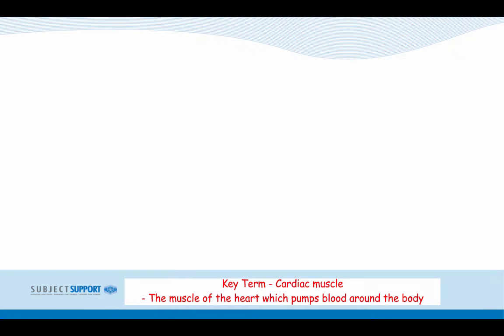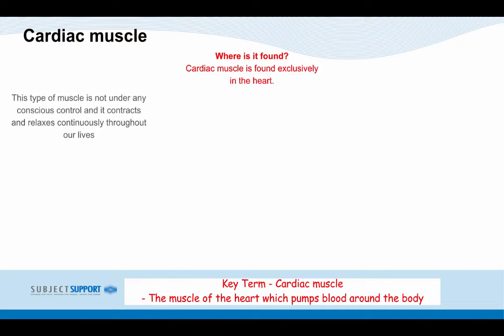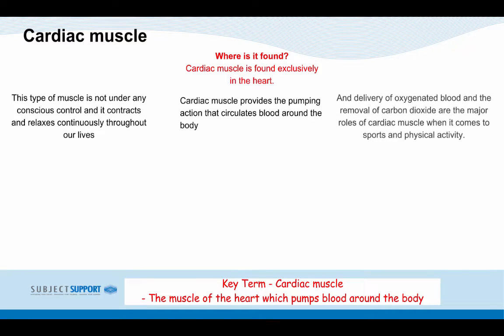Key term — cardiac muscle: the muscle of the heart which pumps blood around the body. Cardiac muscle is found exclusively in the heart. This type of muscle is not under any conscious control and it contracts and relaxes continuously throughout our lives. Cardiac muscles provide the pumping action that circulates blood around the body, including the delivery of oxygenated blood and the removal of carbon dioxide — the major roles of cardiac muscle when it comes to sports and activity.